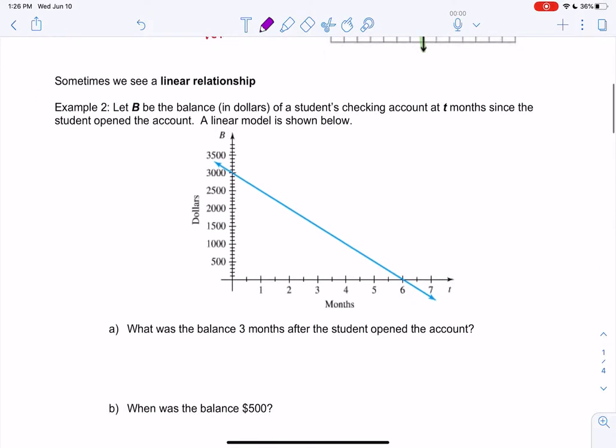So here's one where the line's already been given to us. We call this a linear relationship. It makes a line.